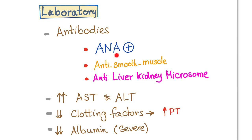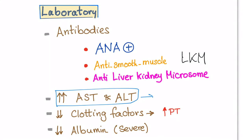In the lab, we find antibodies in the blood such as ANA (anti-nuclear antibodies), anti-smooth muscle antibodies, and anti-liver kidney microsome antibodies, also known as anti-LKM antibodies. Since it is a hepatitis or liver inflammation, the liver enzymes will increase — the liver transaminases will be elevated.